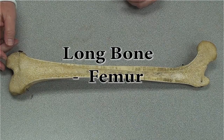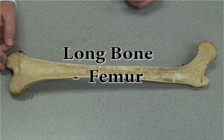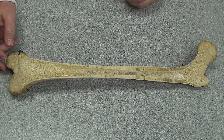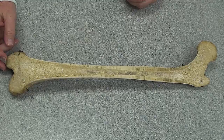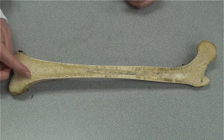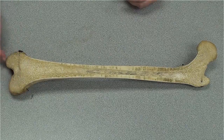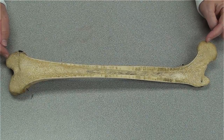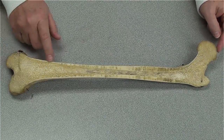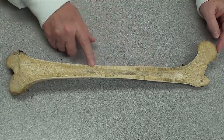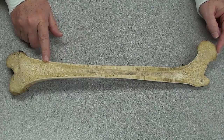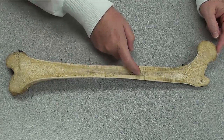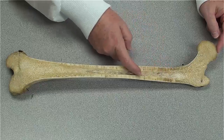We're going to use this sagittally sectioned real human femur to look at the structures that make up a long bone. The two ends of the bone are called the epiphysis. The shaft is the diaphysis. The shaft has a hollow cavity called the medullary cavity.